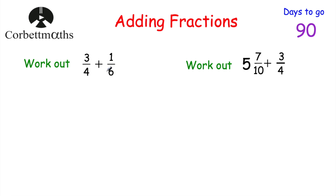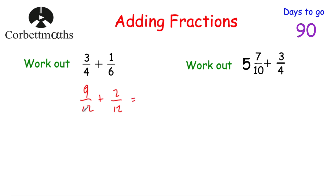To work out three quarters plus one sixth, we want a common denominator. Because the denominators are four and six, I'm going to find the lowest common multiple of four and six: four, eight, twelve — and six, twelve. So I'm going to use twelve and twelve. To get from four to twelve we multiply by three, so three times three is equal to nine. To get from six to twelve we double it, so doubling the numerator gives two. So we've got nine twelfths plus two twelfths, which equals eleven twelfths.